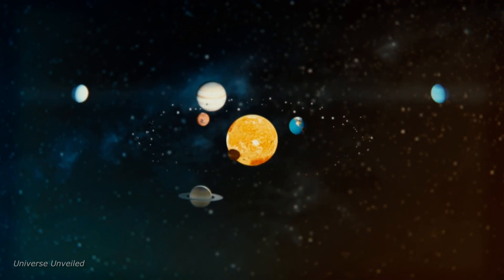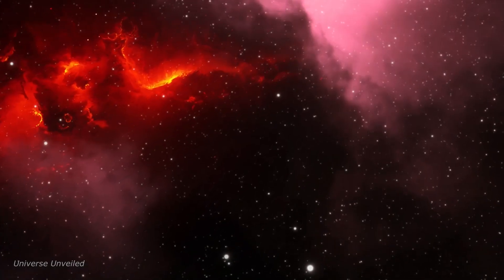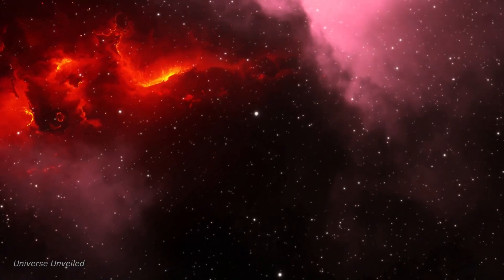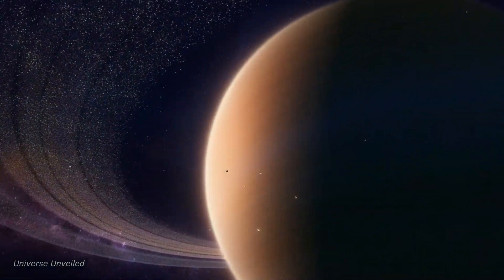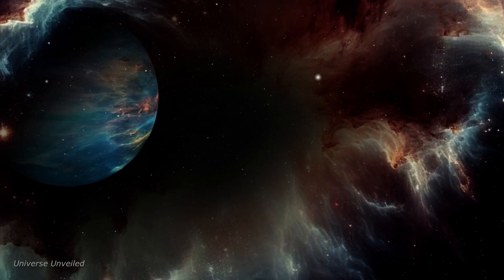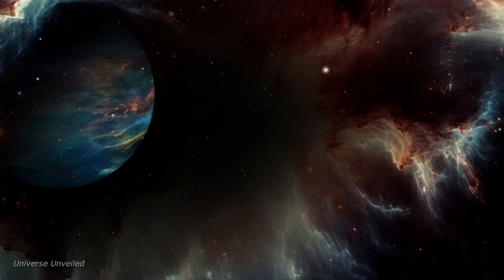Jupiter, the largest planet in our solar system, is a gas giant famous for its great red spot, a storm that's been raging for hundreds of years. Saturn, with its iconic rings, is another gas giant that's home to over 80 moons.